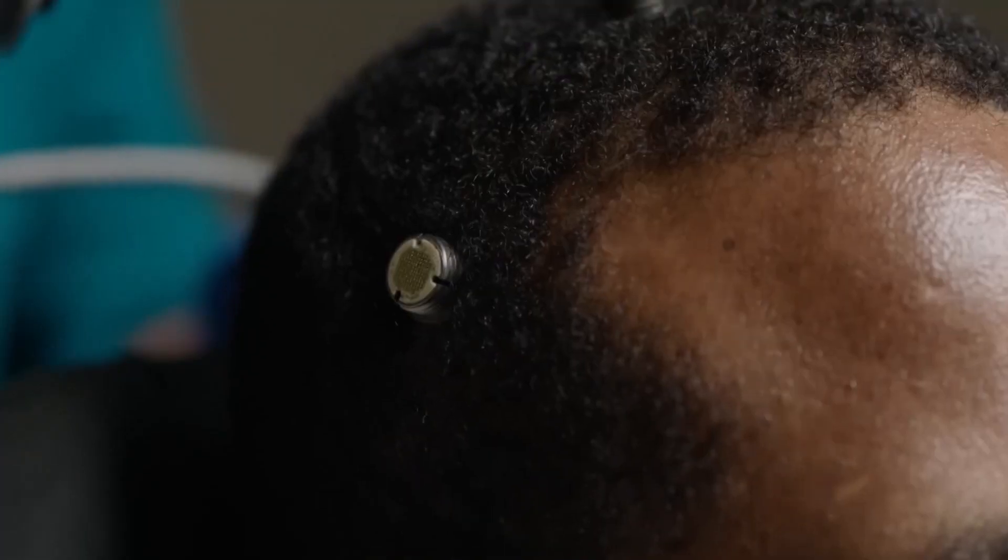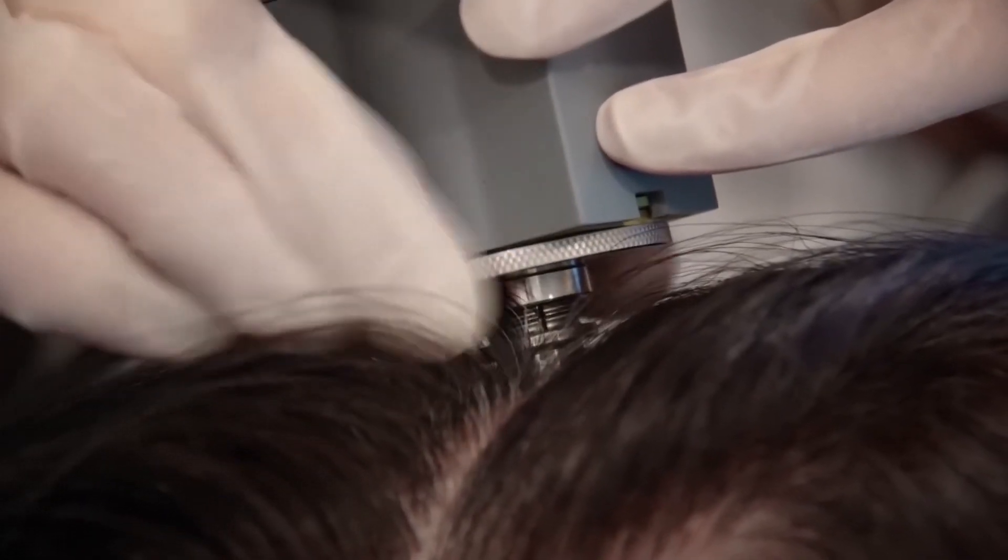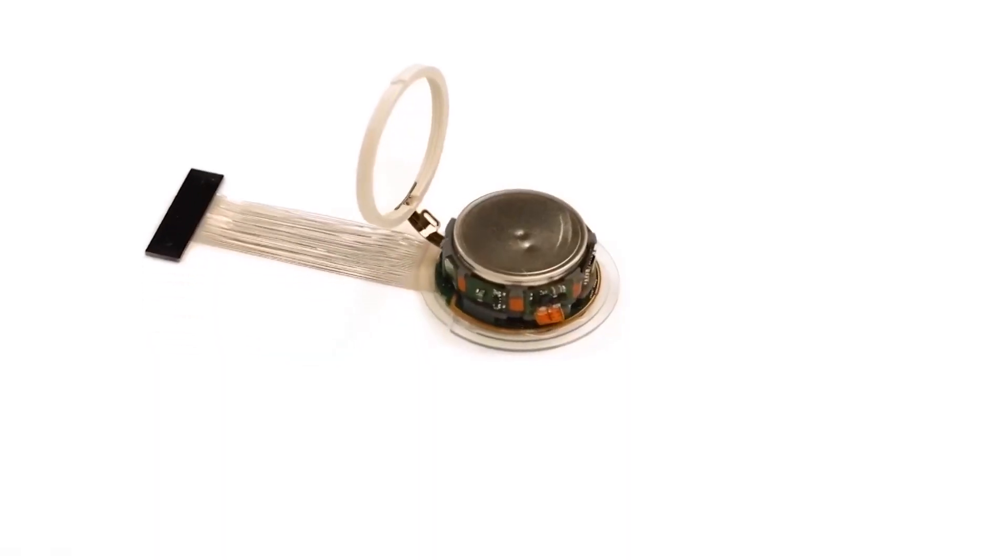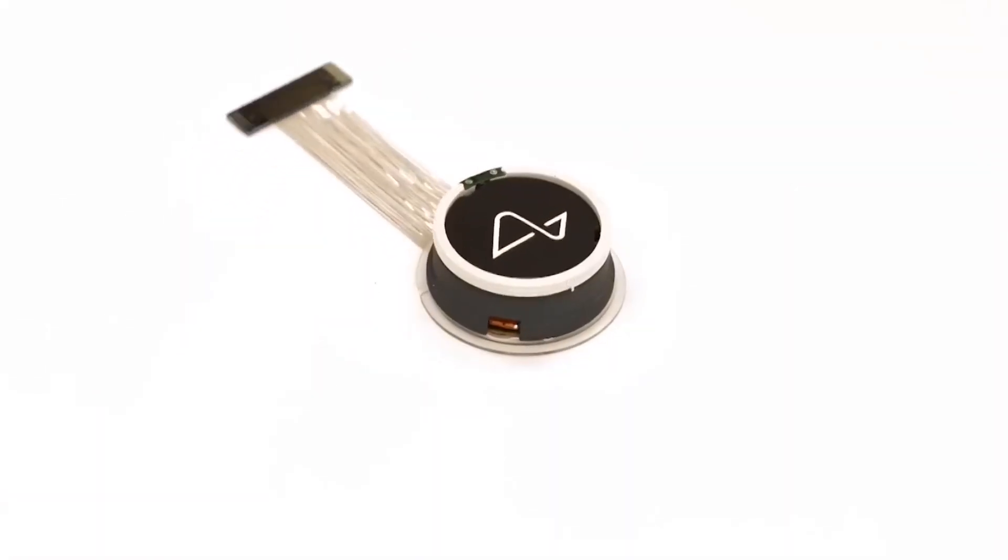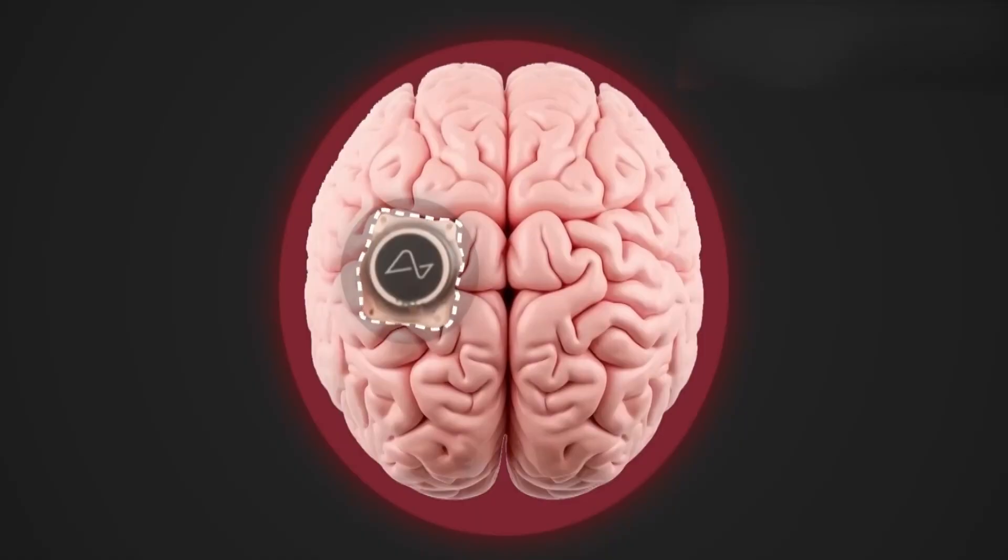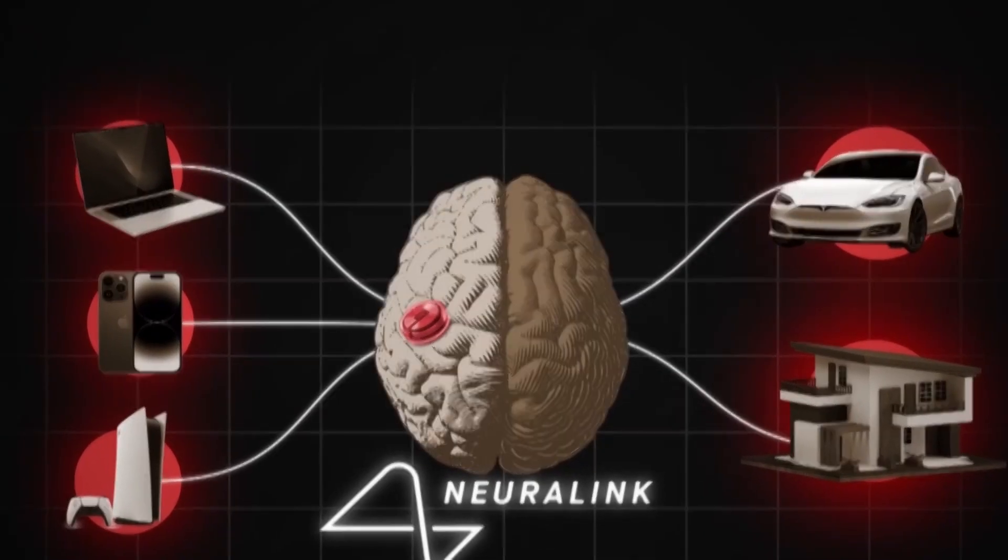This tiny chip, similar to the size of a coin, features an array of minuscule wires, each about 20 times thinner than a human hair, which extends into the patient's brain. With 1024 electrodes embedded in the chip, it serves to both control and monitor brain activities, essentially electrically stimulating the brain. It wirelessly sends data to digital devices.